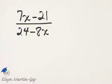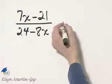How do we simplify this expression? We completely factor the numerator, completely factor the denominator, then look for any common factors.